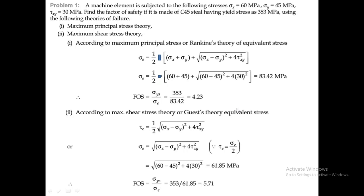We have one simple problem here wherein a machine element is subjected to stresses: σx (normal stress in x-direction) is 60 MPa, σy (normal stress in y-direction) is 45 MPa, and shear stress τxy is 30 MPa. We are required to find the factor of safety for this machine element made of C45 steel, which has a yield strength of 353 MPa.